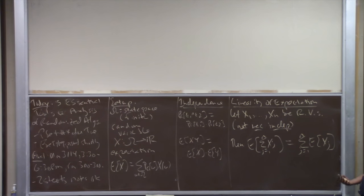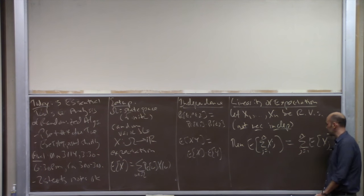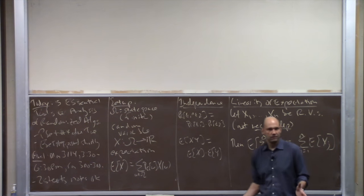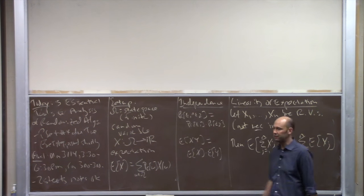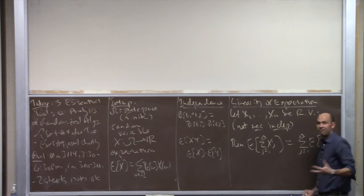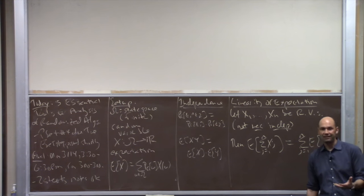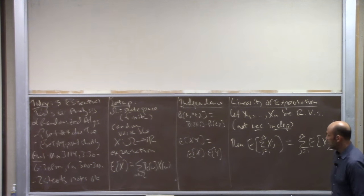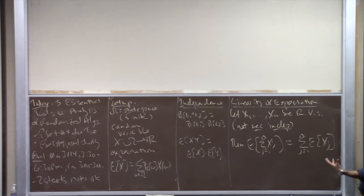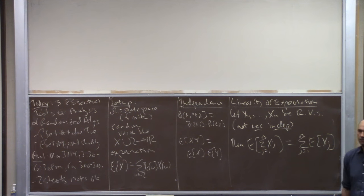Why should you care about linearity of expectation? The canonical use case: imagine you have some random variable you really want to understand, like the number of comparisons quicksort makes. Often you can take a complicated random variable and write it as a sum of much simpler random variables — often just zero-one indicator random variables. Linearity of expectation then says: to understand the expectation of the complicated variable, just understand the expectation of each simple constituent variable, then add them up.